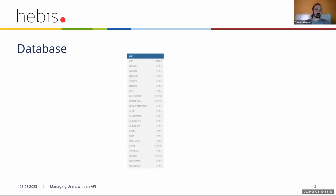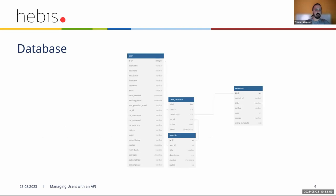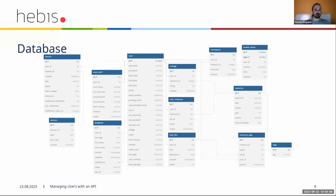Let's have a look at the database. When we talk about all the stored user data, first we have the user table where you have the username, last name, first name, email, and so on. And you have related tables — for example, the favorite list, with the list, the resources, and so on. You can also have comments, and there is a whole bunch of this data that you need to inform users about or delete on request.